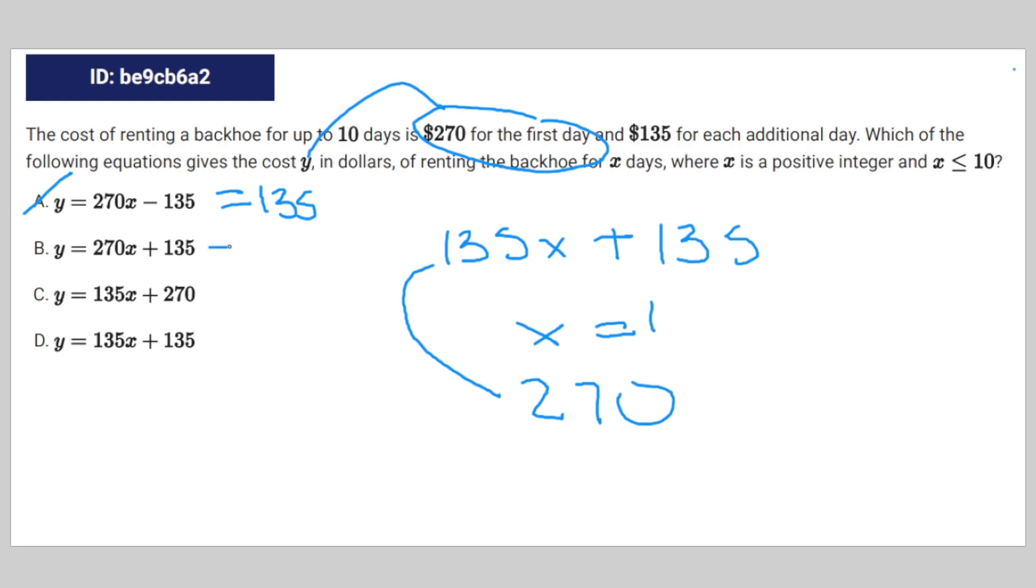Put 1 for B, it's going to give you $405, not $270. And the same thing goes for C.